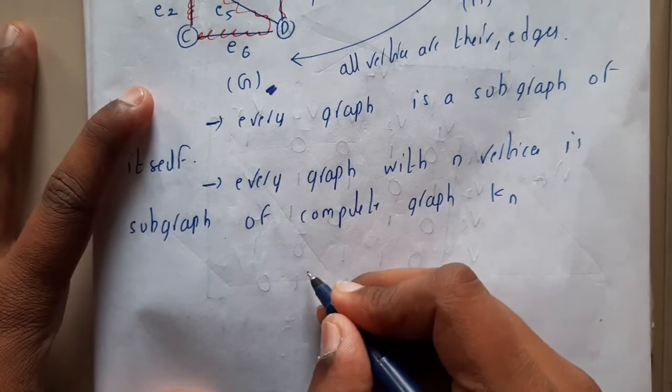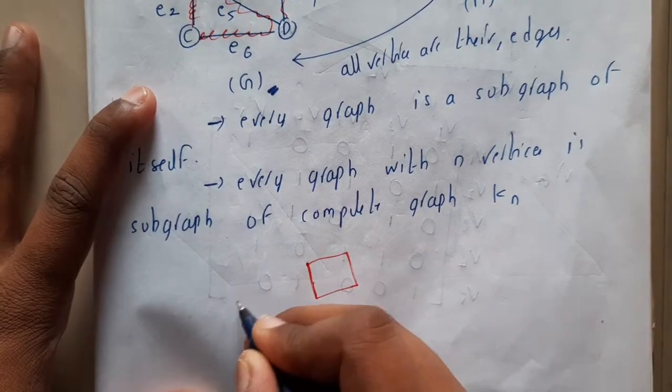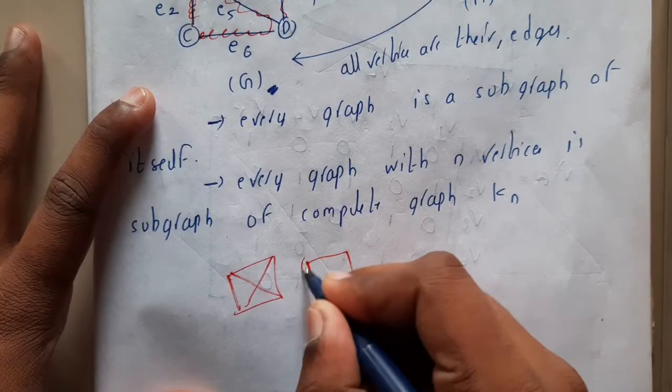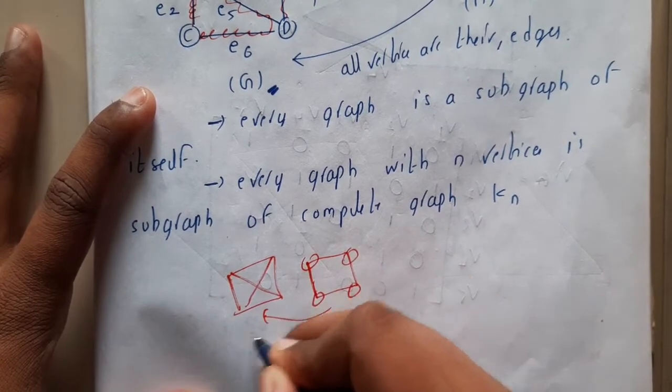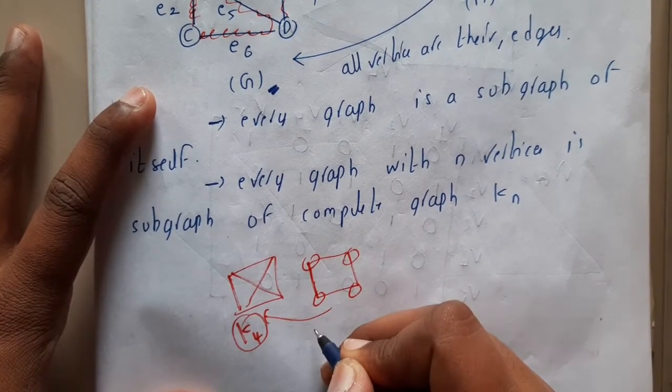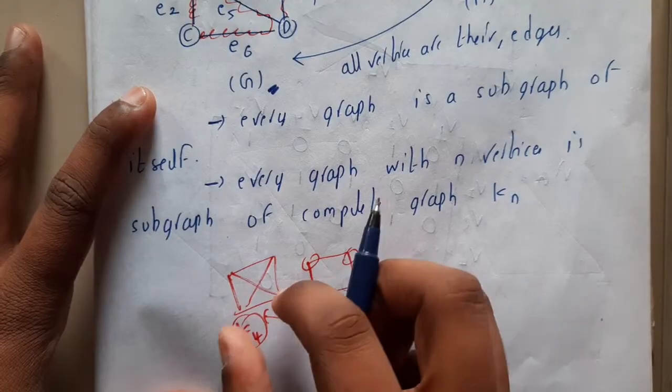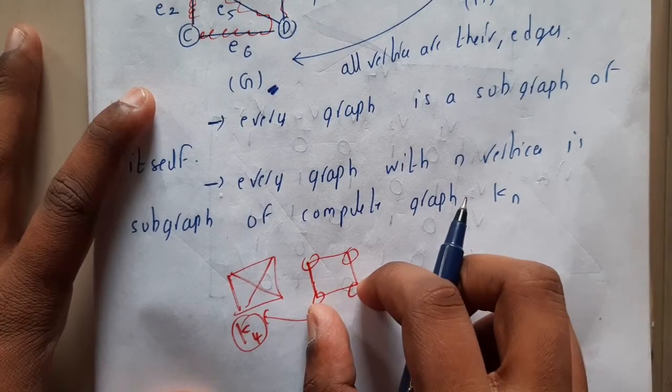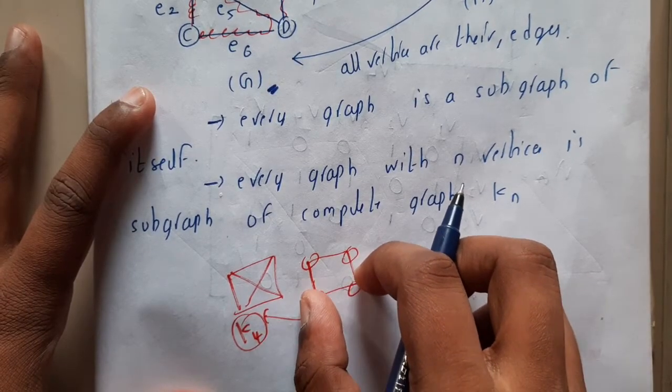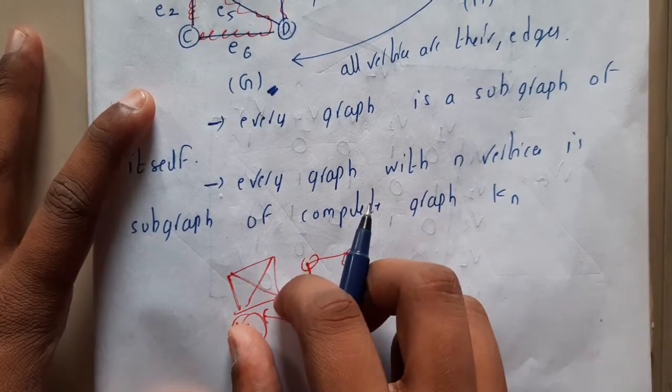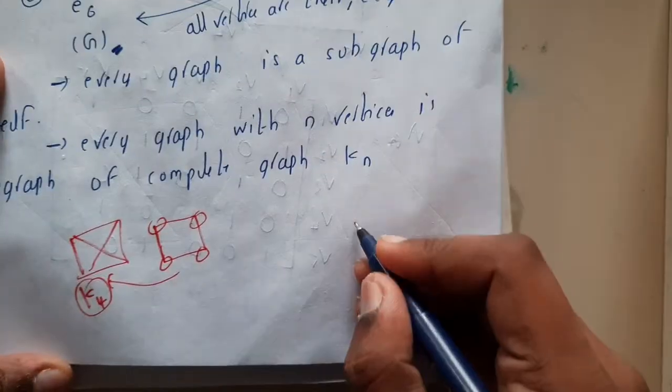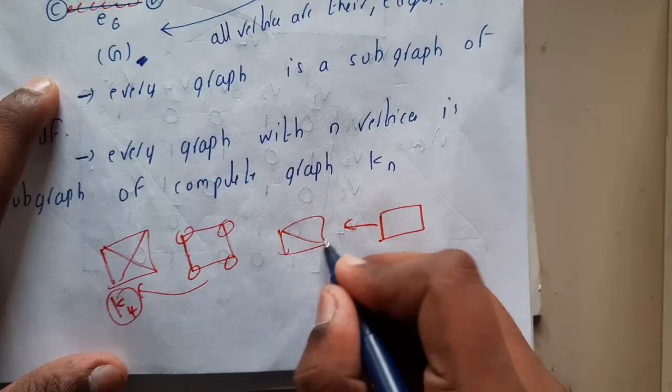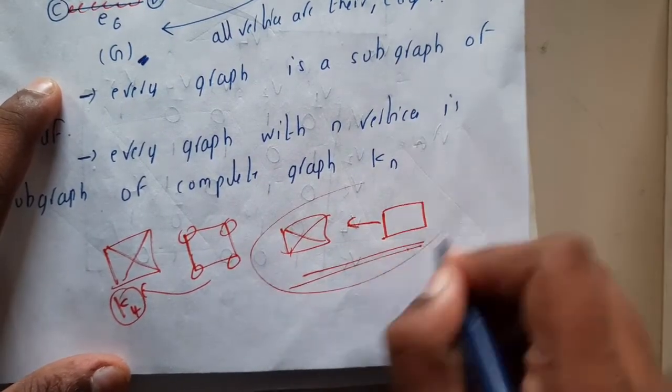Assume that this is a graph and this is the complete graph for this particular graph. Here we are having four vertices and this is nothing but K4, the complete graph 4. So indirectly, any graph is a subgraph of the complete graph. This is a small theorem that you should remember.